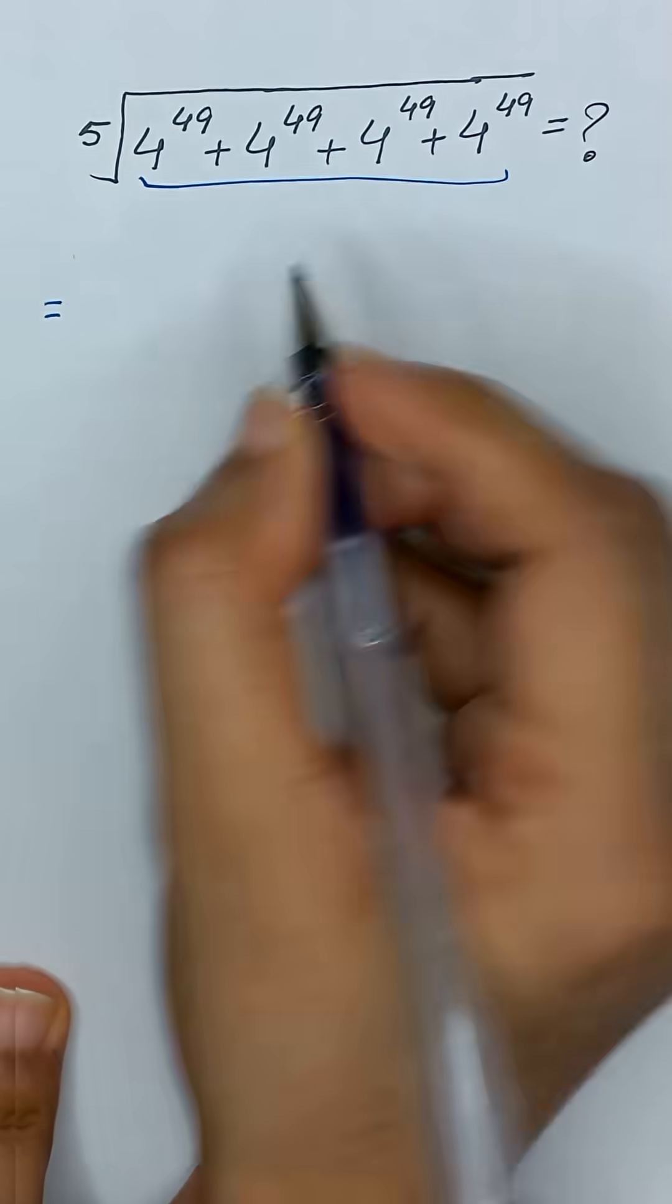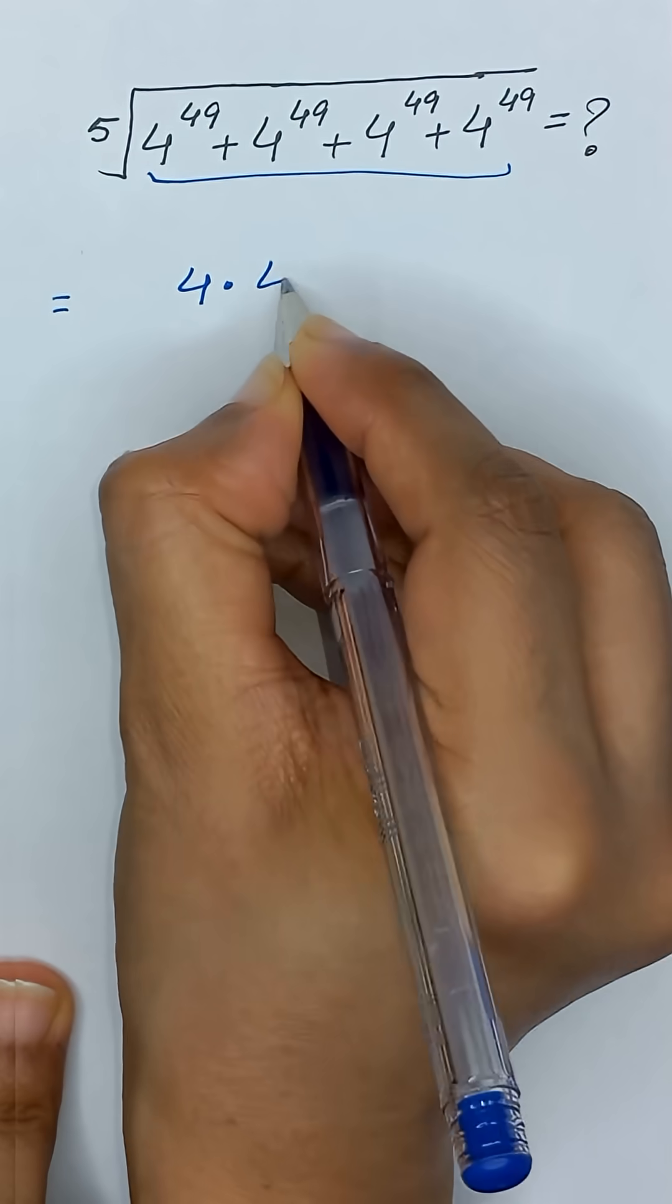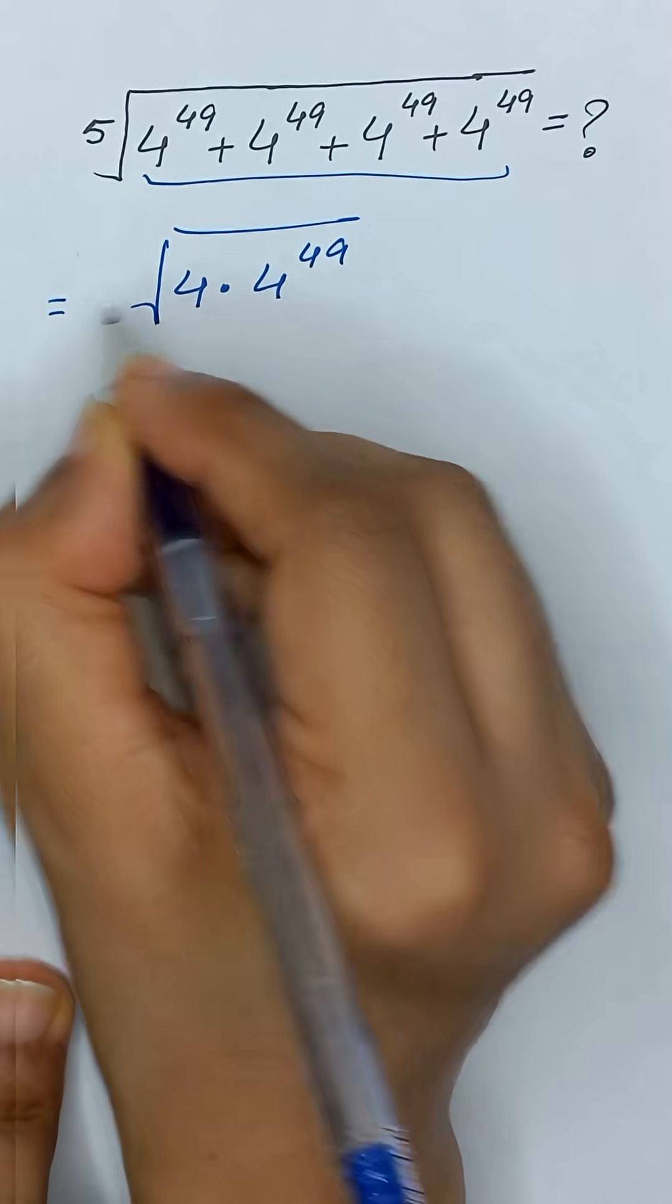We can write it as 4 times 4 to the power 49 and its fifth root.